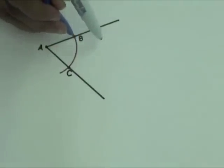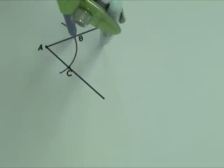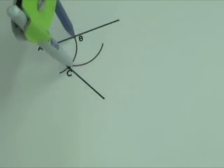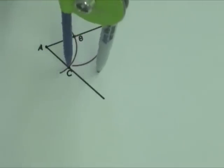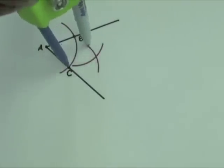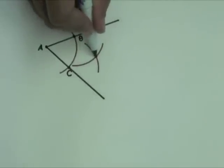Place the compass point on B and draw an arc inside angle A. Without changing the compass width, place the compass point on C and draw an arc that intersects the previous arc. Label the point of intersection of the two arcs as X.